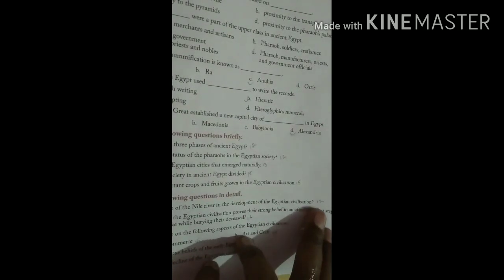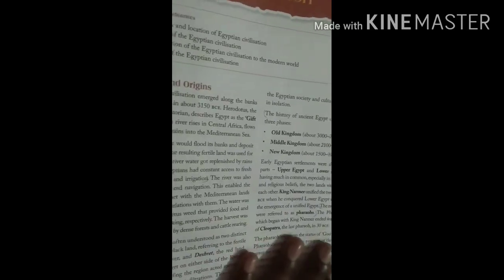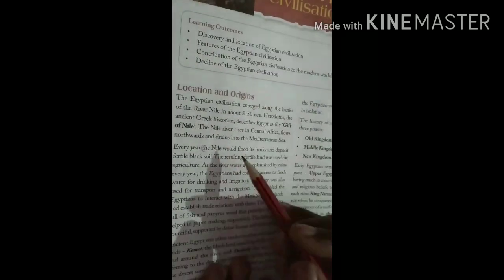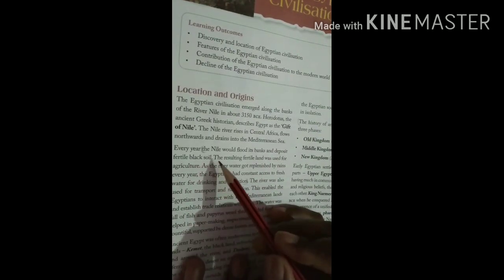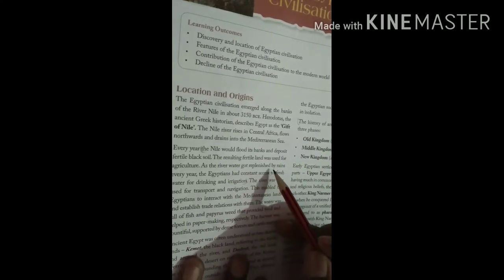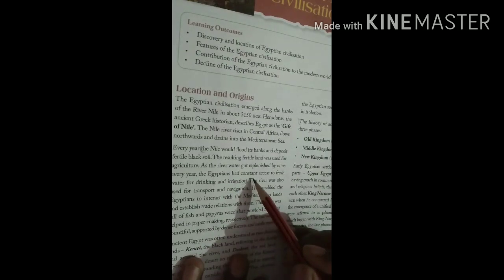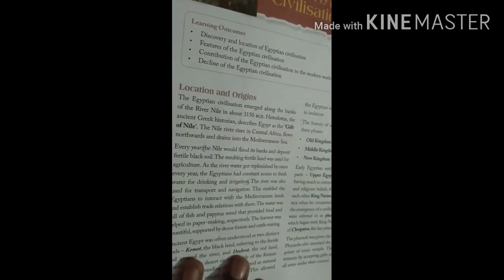Answer the following questions in detail, exercise E. Describe the role of the Nile River in the development of the Egyptian Civilization. This is on page number twelve. The Nile would flood its banks and deposit fertile black soil. The resulting fertile land was used for agriculture. As the river water got replaced by the rain every year, the Egyptians had constant access to fresh water for drinking and irrigation.